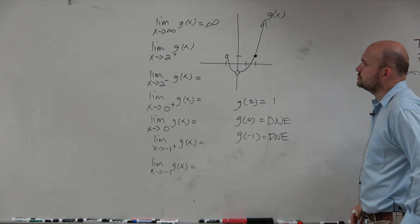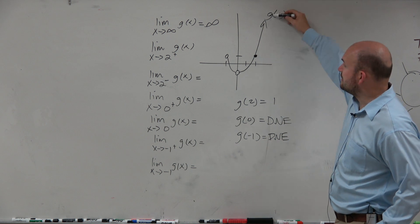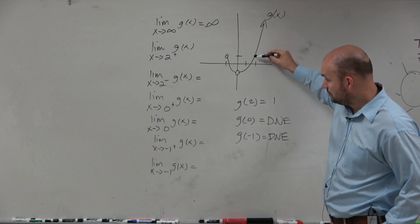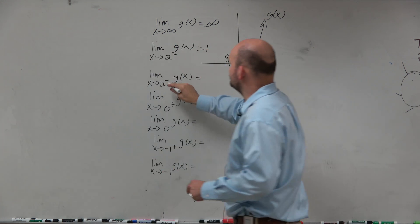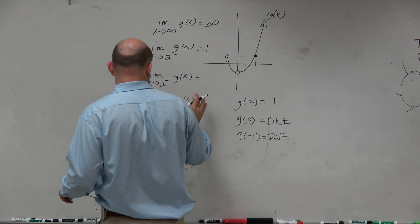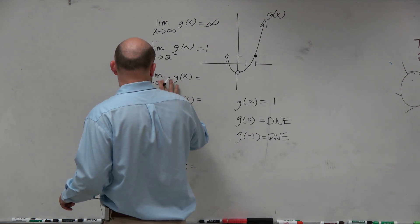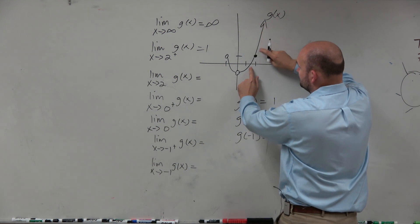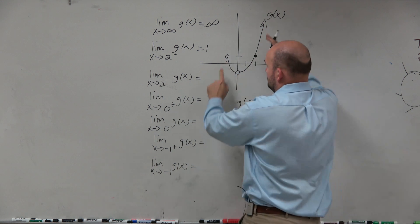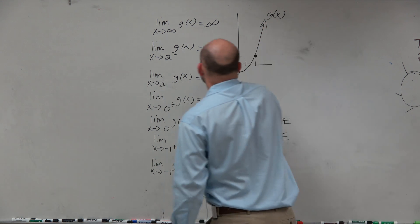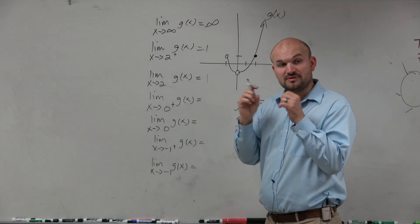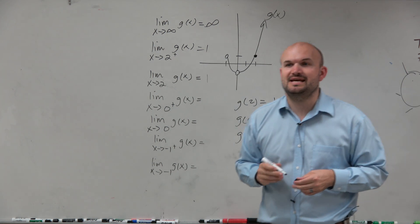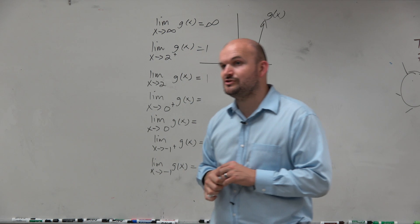The limit as x approaches 2 from the right. So here's 2. As we're coming from the right, what value are we getting closer and closer to? 1. What about as we approach 2 from the left and from the right? What value do we get? Positive 1. So just remember, guys, to evaluate the general limit, both the left and the right have to be the same. It's very important, and we'll get to our first case here where we're going to have an issue with that.